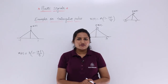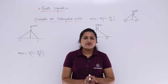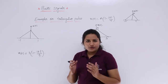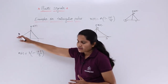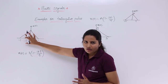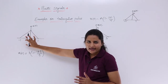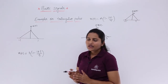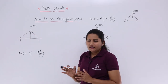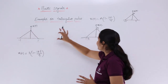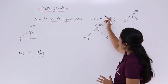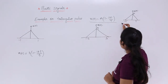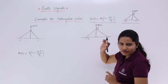In this video, we are going to discuss some examples of triangular pulse. For example, in your exam, you may get any signal — a pictorial representation of a triangle — and you are asked to find the equation representing that signal. You need to relate and compare that signal with the standard equation for a triangular pulse and its corresponding standard signal.